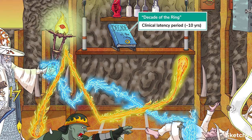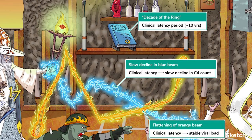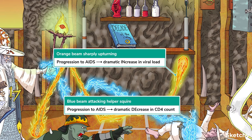After this initial acute phase comes a long asymptomatic period known as clinical latency, lasting about 8 to 10 years. The orange RNA beam has flattened out somewhat and hasn't yet shot up again — this happens because the host immune response is keeping the virus in check, to some degree. But HIV is continuously working to destroy CD4 helper T cells, and the blue CD4 count beam is slowly decreasing. If the infection progresses unrecognized and without intervention, clinical latency comes to an end.